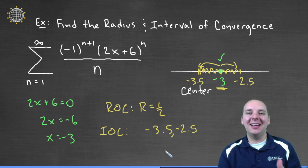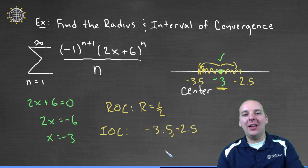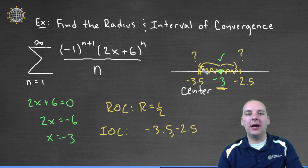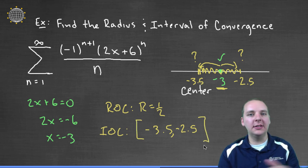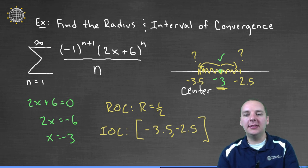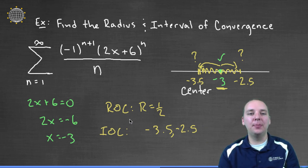Now here's the problem though. The endpoints have to be tested separately. I honestly don't know yet if this guy converges at negative 3.5 or at negative 2.5. This could be open closed, that's a possibility. It might be closed open, it might be open open, or it might be closed closed. It might converge at these endpoints, or it might not in any combination. So how do we test this? Well what we actually have to do is test them separately.